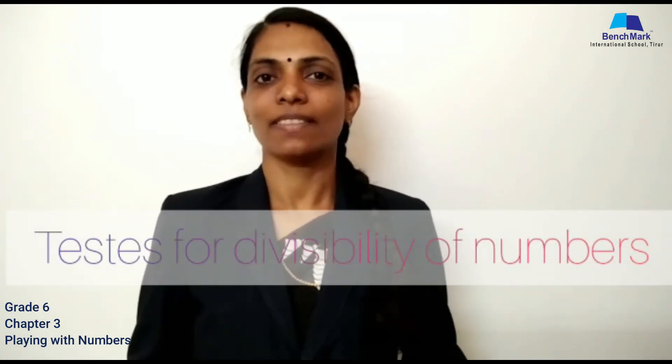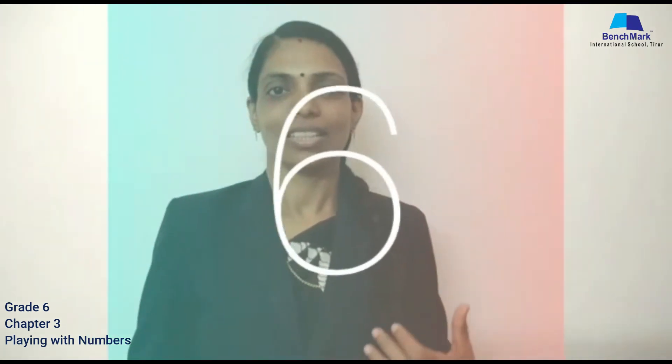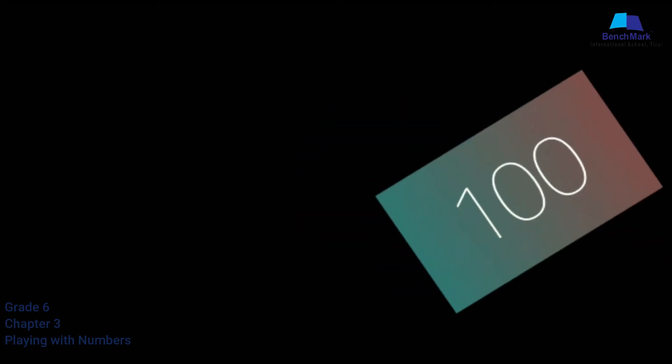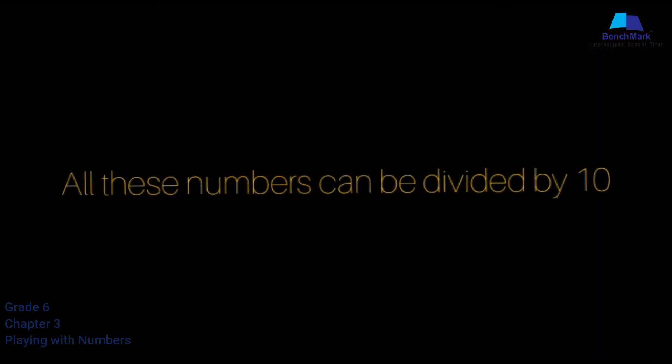Let's do the exercise questions in the textbook based on these topics. The next topic in this chapter is Tests for Divisibility of Numbers. Here are some easy techniques to identify whether a given number is divisible by 2, 3, 4, 5, 6, 8, 9, 10, and 11. If a number has 0 in the ones place, then it is divisible by 10 — for example, 100, 1000, 7010, 60, etc.